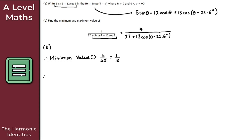For the maximum value, we minimize the denominator. The minimum of cosine is −1, giving denominator = 27 + 13×(−1) = 27 − 13 = 14. So the maximum value is 4/14 = 2/7. The minimum value is 1/10 and the maximum value is 2/7, which concludes this video on the harmonic identities.